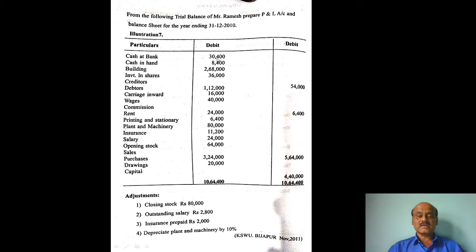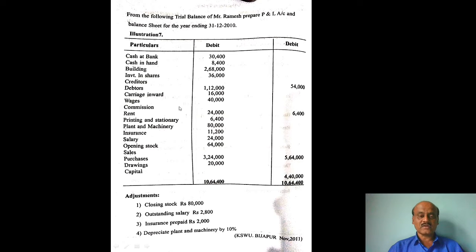Cash at bank: Rs. 30,400. Cash in hand: Rs. 8,400. Building: Rs. 2,68,000. Investment in shares: Rs. 36,000. Creditors: Rs. 54,000. Debtors: Rs. 1,12,000. Carriage inwards: Rs. 16,000. Wages: Rs. 40,000. Commission (credit side): Rs. 6,400.